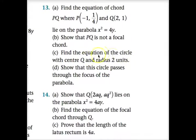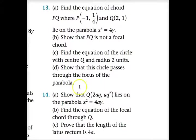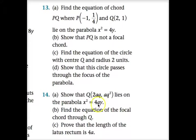Part C of question 13 is straightforward — find the equation of a circle with centre (2, 1) and radius 2, using (x minus h) squared plus (y minus k) squared equals r squared. To show the circle passes through the focus, substitute (0, 1) into the circle equation and verify it satisfies it.